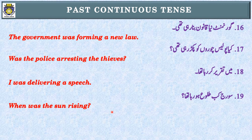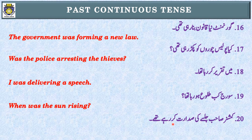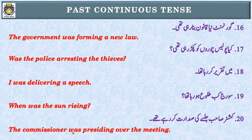Sentence number twenty: commissioner صاحب جلسے کی صدارت کر رہے تھے۔ First step: 'رہے تھے' — Past Continuous Tense۔ Second step: subject — 'commissioner' — singular noun، was use کریں گے۔ سدارت کرنا = preside over۔ The commissioner was presiding over the meeting.